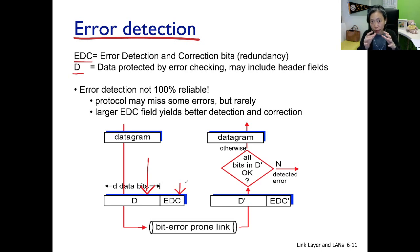The two parts concatenated are being passed through the network. At the receiver end, we apply the same codec on D prime. If the outcome is identical to the EDC prime, then we pass the error check. Otherwise we detect an error.